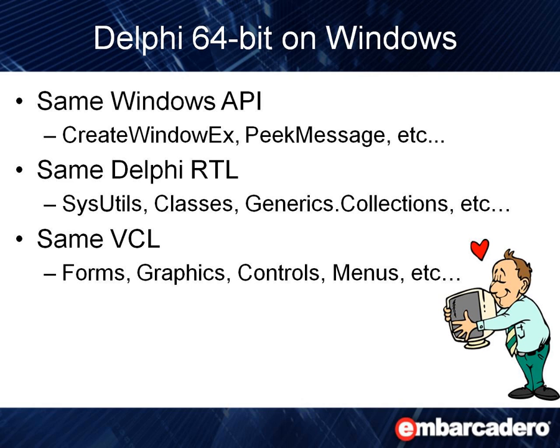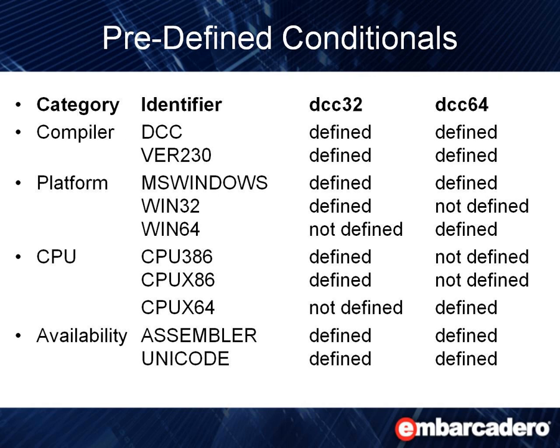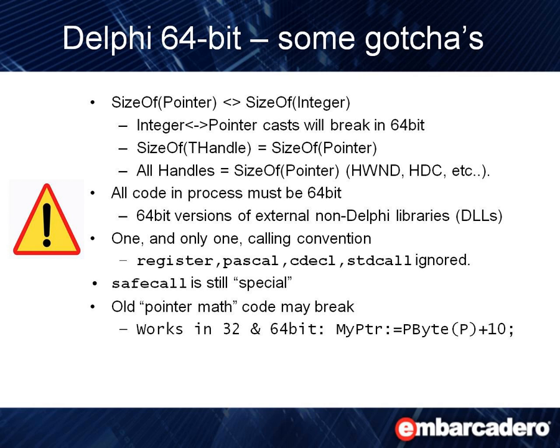Let's take a look at what will make your life easy as you're planning the move from 32-bit to 64-bit Delphi. The good news: it's the same Windows API, the same Delphi RTL, and the same VCL for doing development. In many cases it will just be a recompile of your projects. We have some new conditional defines so that if you need to do special 32-bit versus 64-bit development, you can use these defines — for example, for the Win64 platform and the 64-bit CPU.